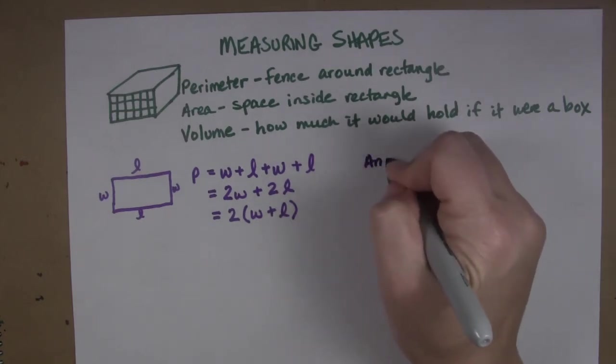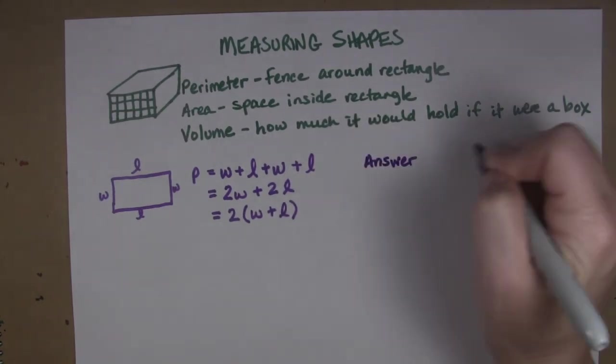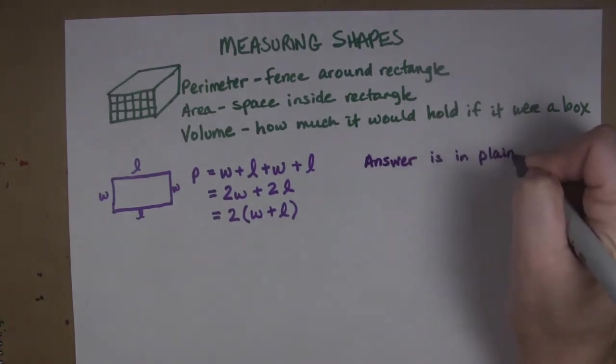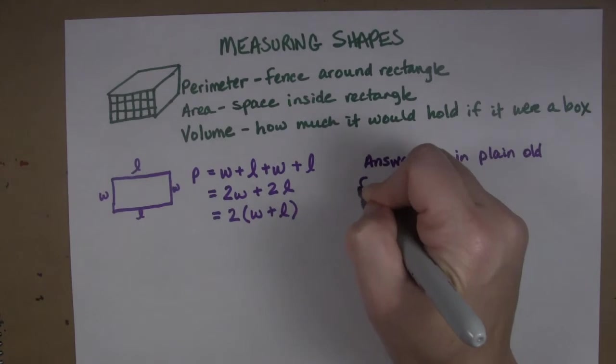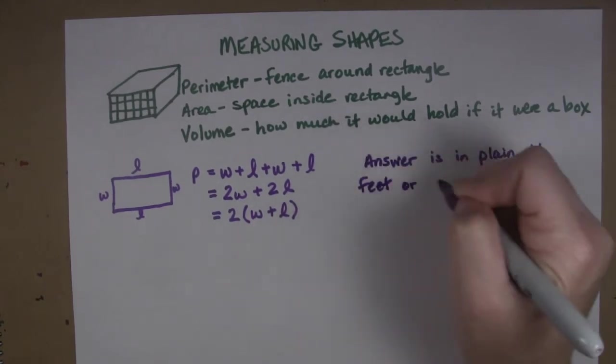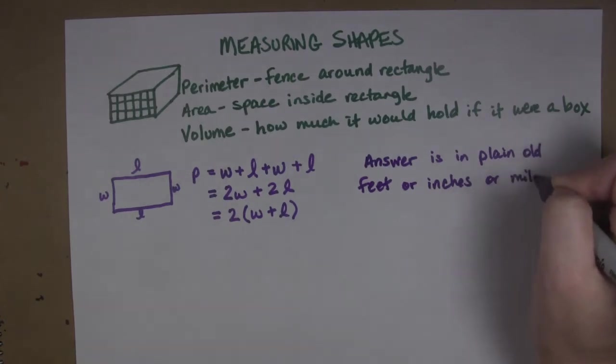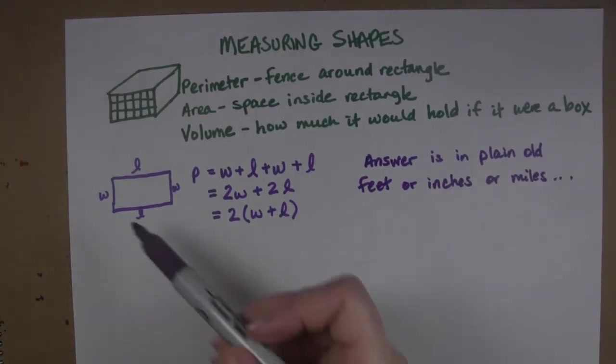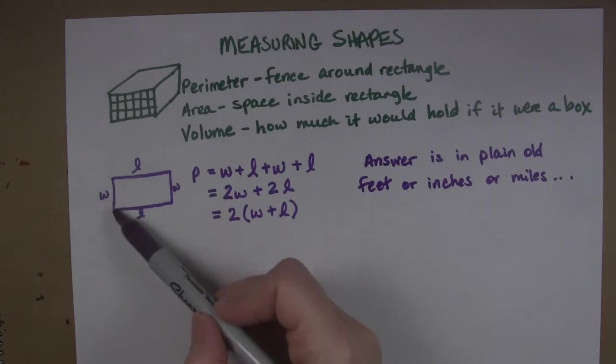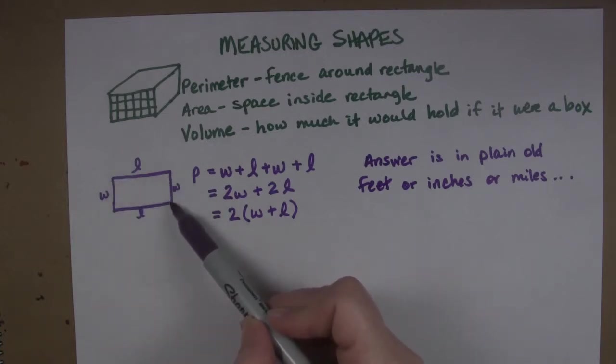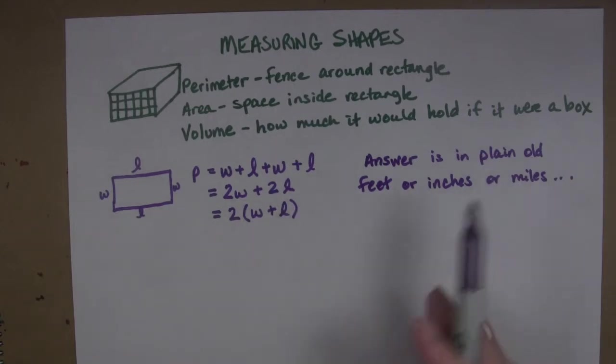Here's what I want you to remember though is that the answer that you get is in plain old feet or inches or miles and so forth. So we're going to get if we're measuring this in feet we're going to say 3 feet plus 5 feet plus 3 feet plus 5 feet equals 16 feet and it's just plain old feet.